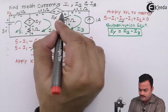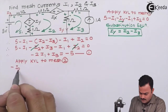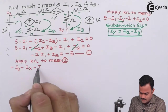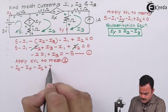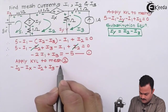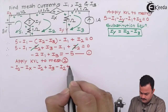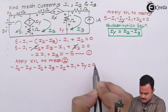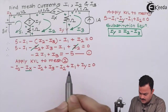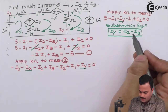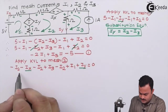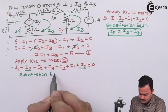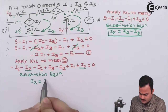Let's apply KVL to mesh 2. Going around the mesh, we get: minus i2, then minus ix voltage term, then minus i2, then minus ix again, then minus i2, then plus i3, then plus i1, then plus iy, all equal to zero. We need substitutions for both ix and iy. iy we have already represented; ix is this current, and this current matches with i1, so the substitution equation for ix is: ix = i1.